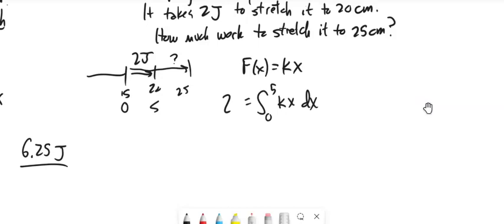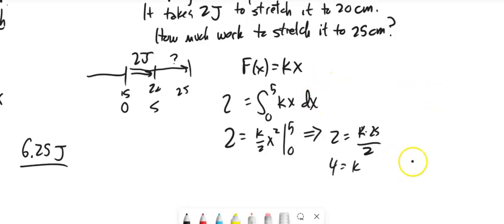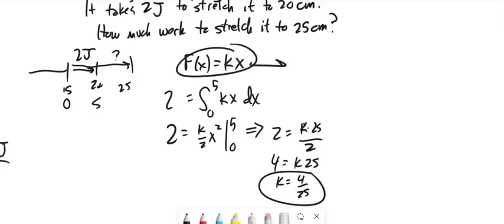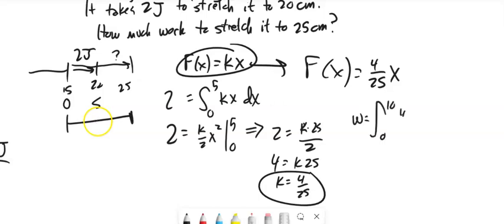Solving: 2 = 25k/2. Multiply both sides by 2, divide by 25, we get k = 4/25. So F = (4/25)x for this spring. To get to 25 cm would be a distance of 10, so work = ∫₀¹⁰ (4/25)x dx.